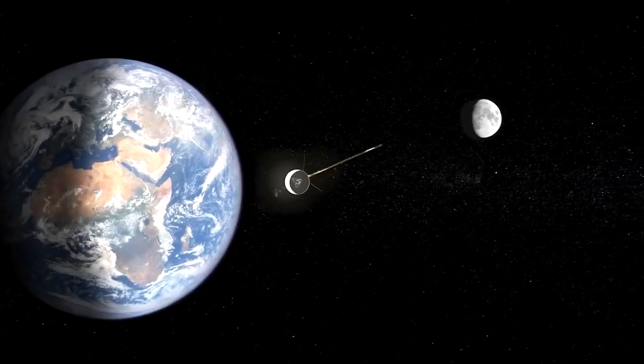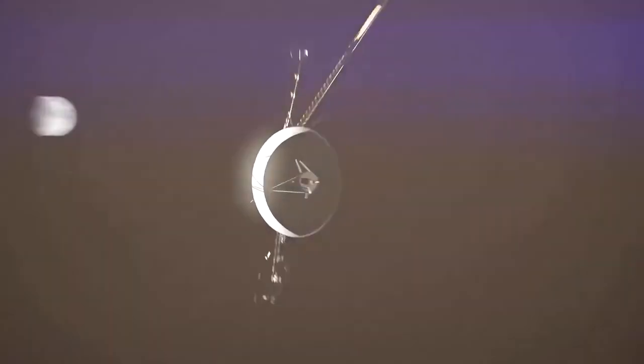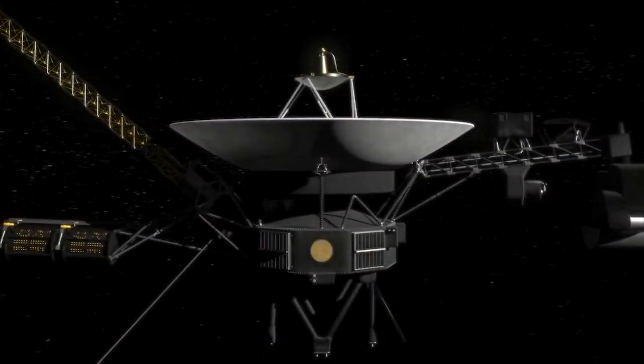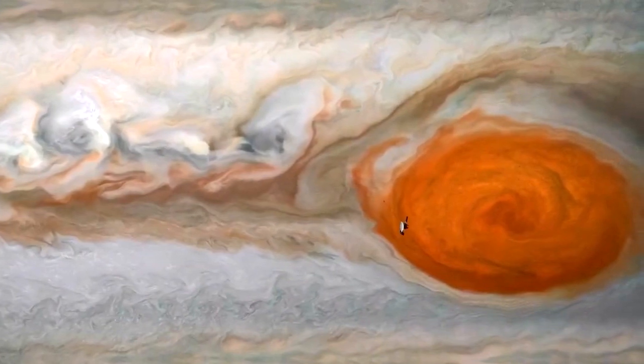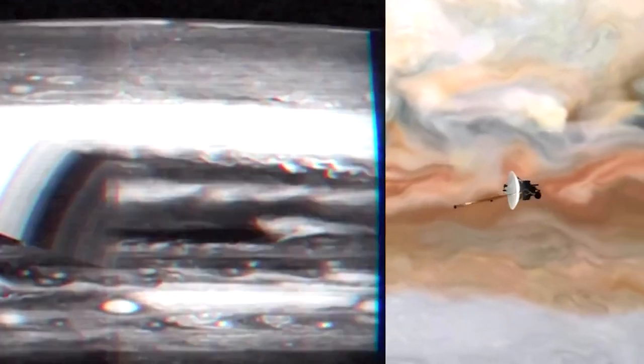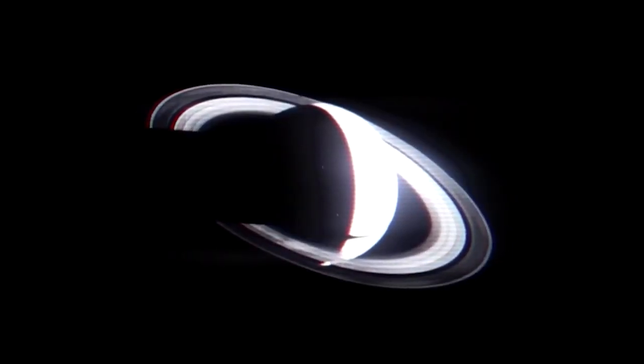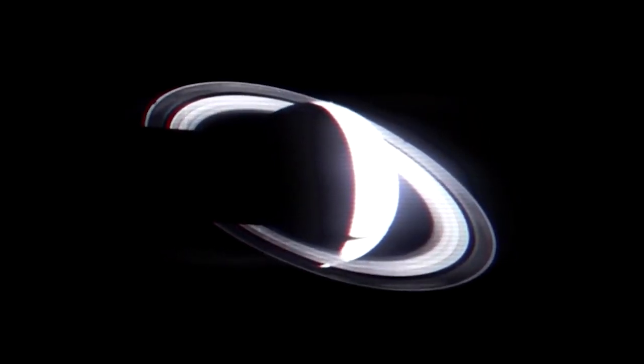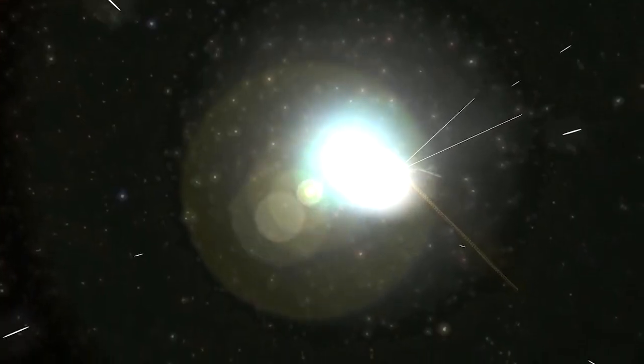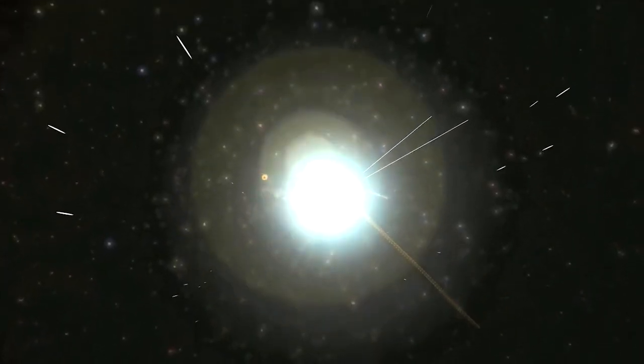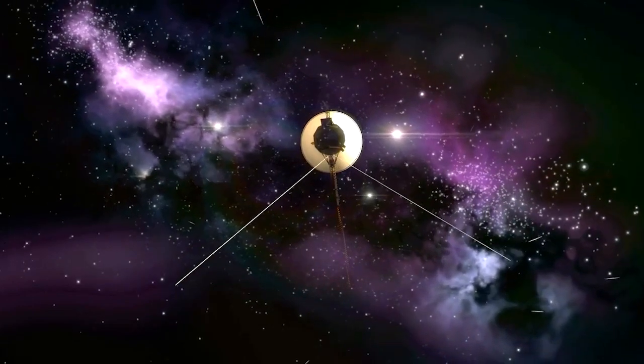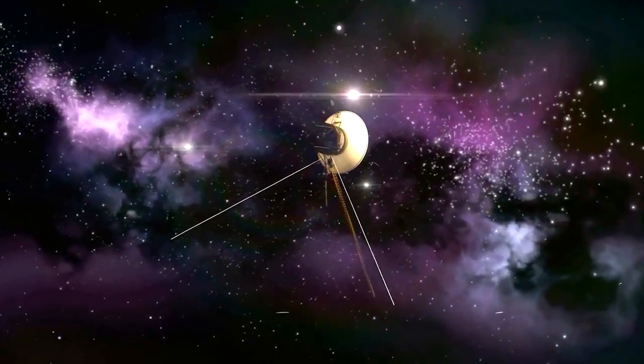Voyager 1 is currently 14.5 billion miles from Earth, and it takes light 20 hours and 33 minutes to travel that difference. That means it takes roughly two days to send a message to Voyager 1 and get a response, a delay the mission team is well accustomed to. Scientists are hard at work trying to explain this new mystery and believe that the data may be a result of the craft deteriorating due to age. The spacecraft are both almost 45 years old, which is far beyond what the mission planners anticipated.